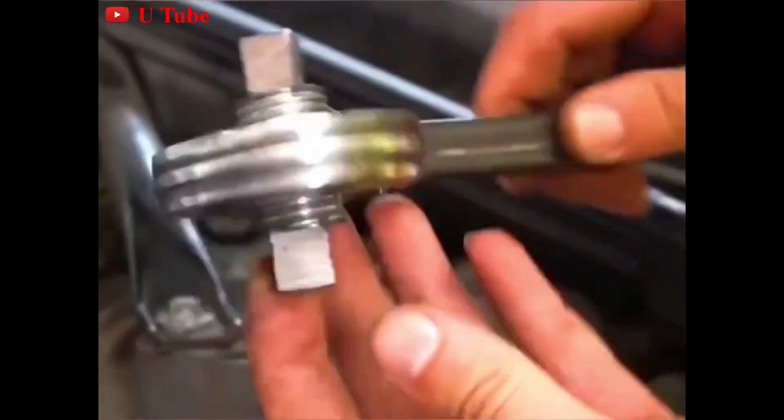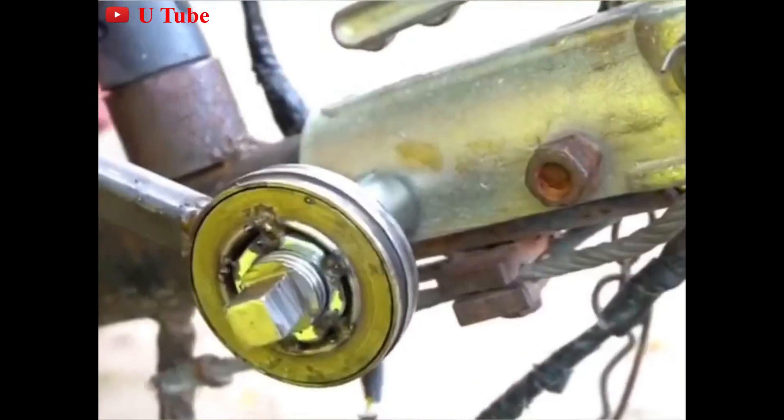You only need a few items like a bearing and sprocket, a square pipe, a nut bolt, etc., involving mechanical operations like welding and grinding.